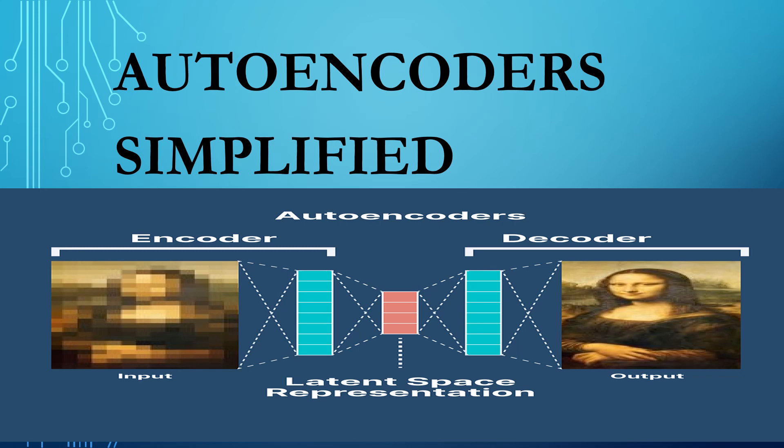Autoencoders are a type of neural network designed to learn compact and useful representations of data. They work by compressing the input data into a lower-dimensional encoded representation and then reconstructing the original input from this encoded representation. In doing so, autoencoders learn to identify the essential features of the data while suppressing less relevant information.